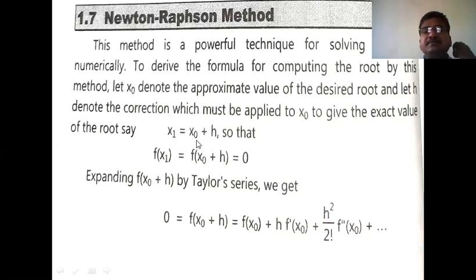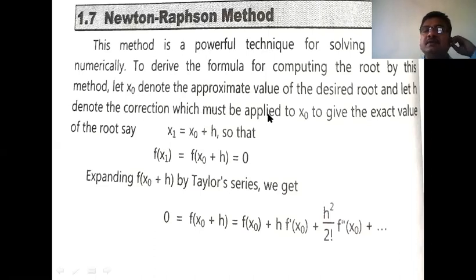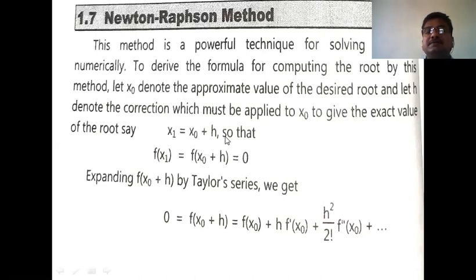What is h? h = x₁ − x₀, meaning the correct root minus the approximate root equals the error h. So x₁ = x₀ + h, where x₀ is the approximate root and x₁ is the correct root of the equation.